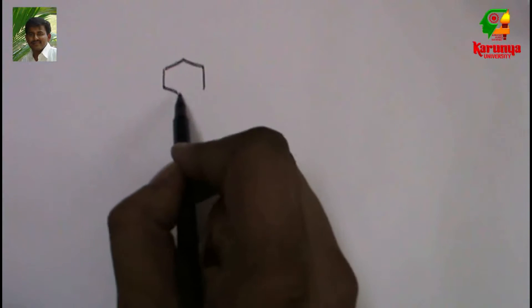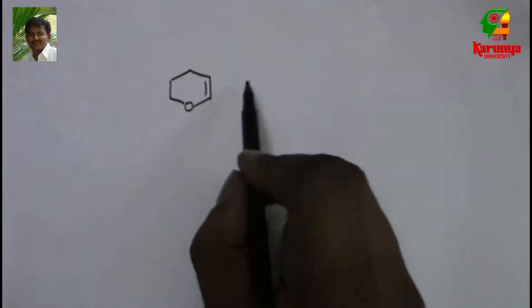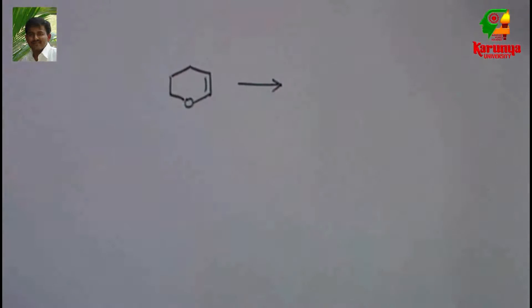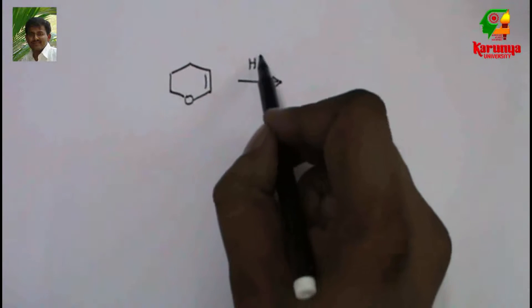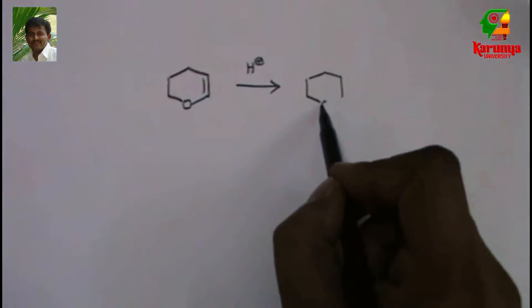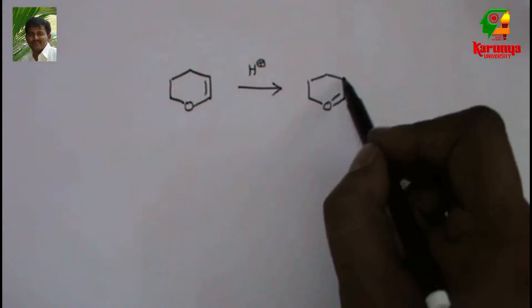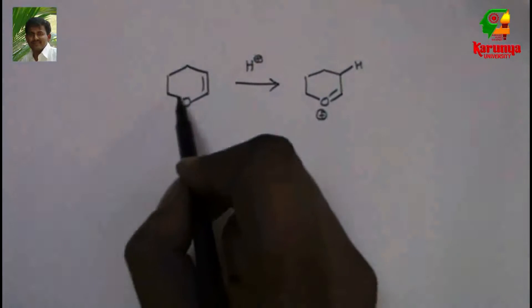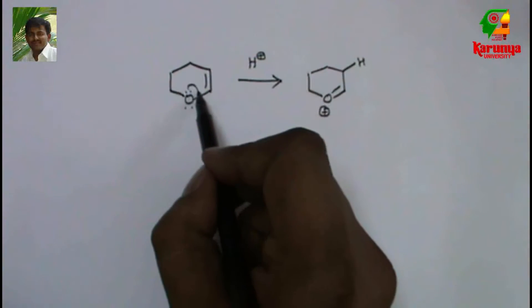Let us take dihydropyran that is given in the problem. It is a very good protecting group for alcohol. When it is treated with H plus, it forms an intermediate like this, what we call an oxonium ion. The lone pair of electrons from oxygen falls here